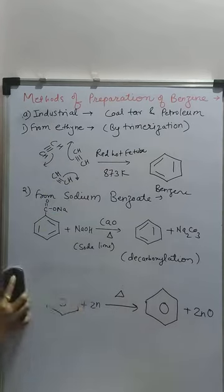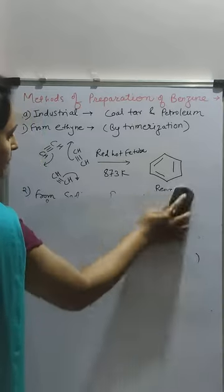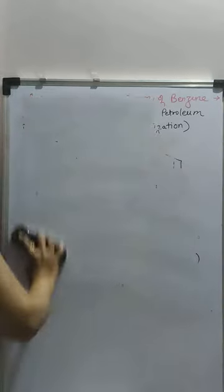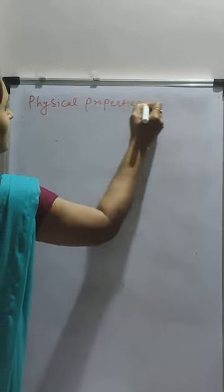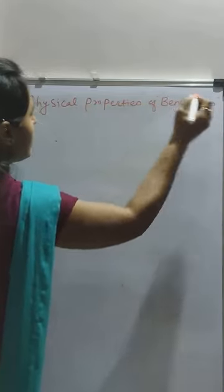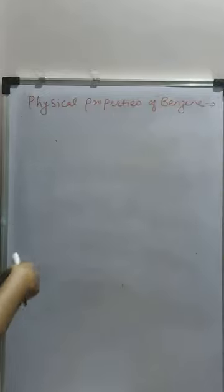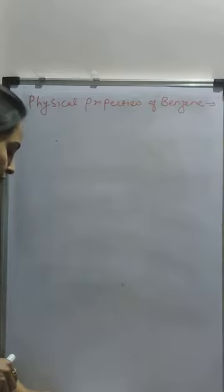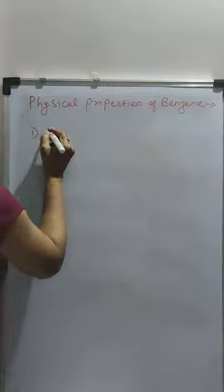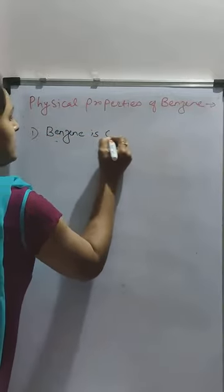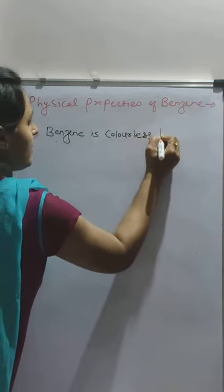We will now move towards the next point: physical properties of benzene. For two marks, you have to mention any four physical properties. The first physical property is that benzene is a colorless liquid.